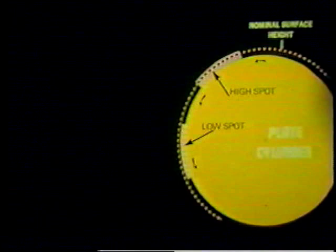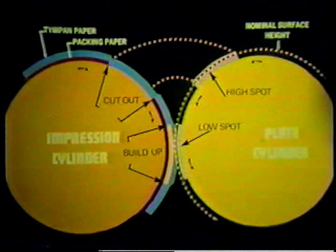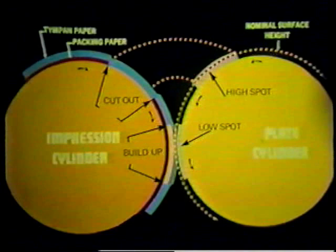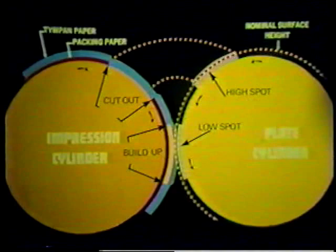To equalize these pressures, the surface of the impression cylinder is covered with one or two plies of tough paper called tympan, which provide a cushion and help prevent uneven printing. Sometimes patches of paper are placed behind low-pressure areas and cutouts removed from high-pressure areas, a practice called making ready. This process can be time-consuming and expensive.